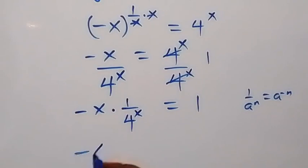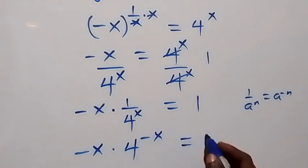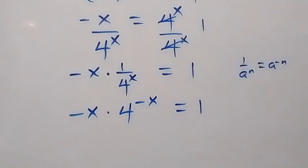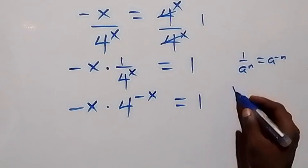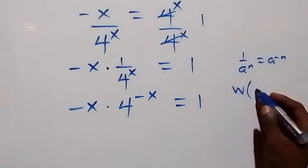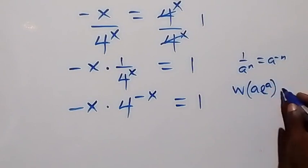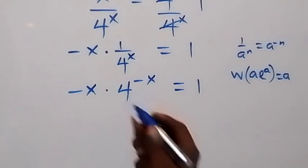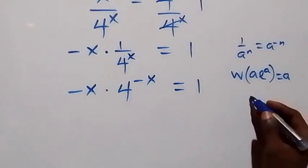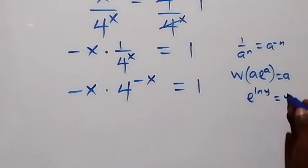This can be written as minus x times 4 raised to power minus x equals 1. From here we want to work towards using the Lambert W function, which satisfies W(a · e^a) = a. We also use the identity that e^(ln y) equals y.